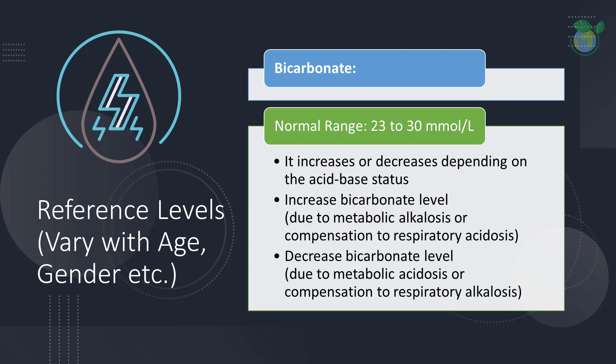Typically, we see elevations in bicarbonate level due to increases in primary metabolic alkalosis or compensation to primary respiratory acidosis, whereas decreases in bicarbonate levels are observed in primary metabolic acidosis or compensation to primary respiratory alkalosis.